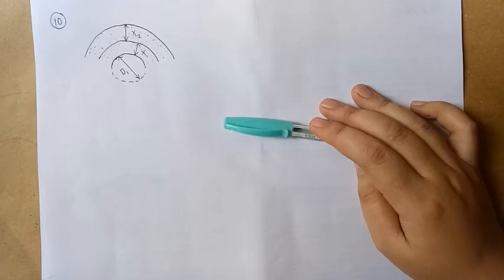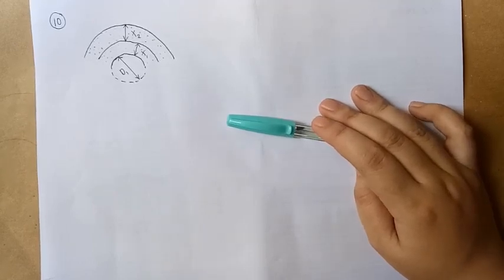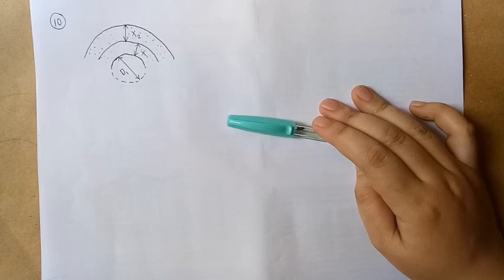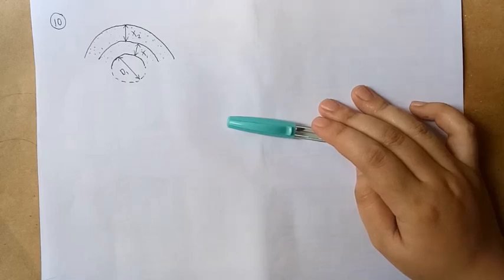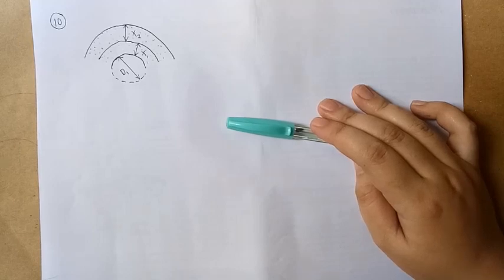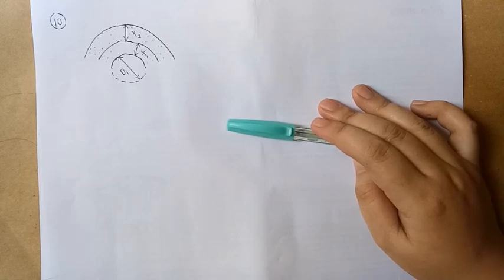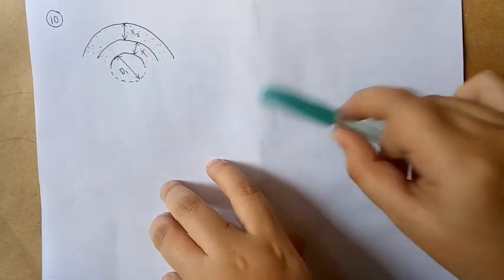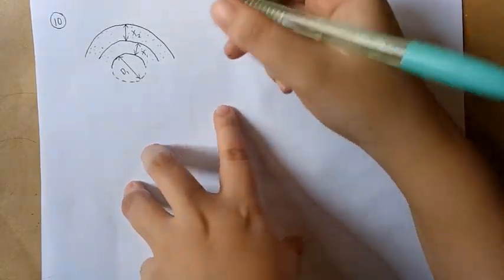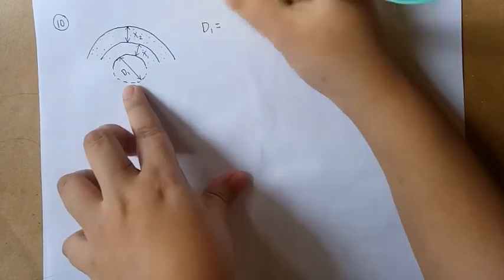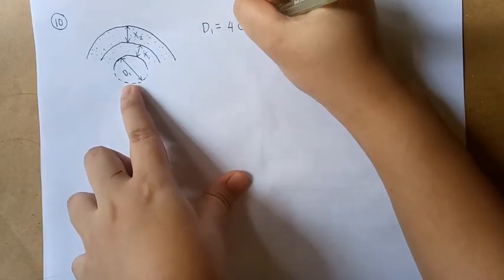Now, in problem number 10, we have a hot fluid being conveyed through a long pipe of 4 cm outer diameter and covered with 2 cm thick insulation. In this problem, we have a pipe with a diameter of 4 cm, so the D1 in this figure is equivalent to 4 cm.